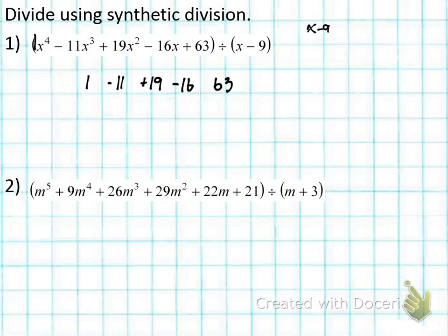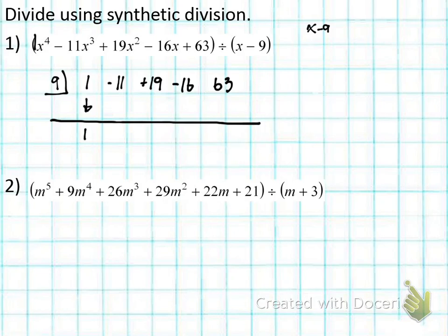Last week we wrote all this out like x cubed, x squared, over and over. Someone thought there's an easier way to do this instead of writing all that. Then we figure out what we identified as a. a is equal to 9, which is x minus 9. Even though it says minus 9, a is still positive 9. Since we wrote down all the coefficients, you draw a line, take the first term and bring it down — that's 1. Then 1 times 9 is 9. Negative 11 plus 9 is negative 2.